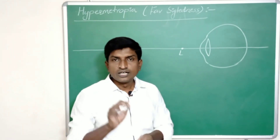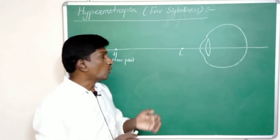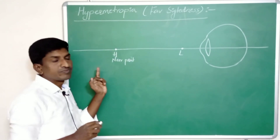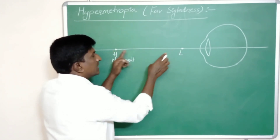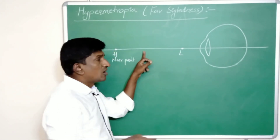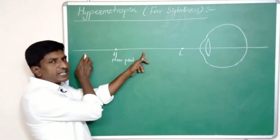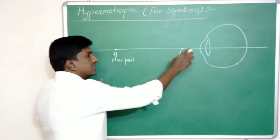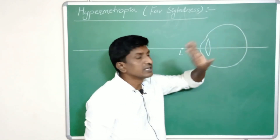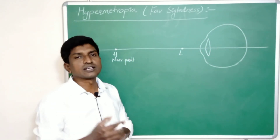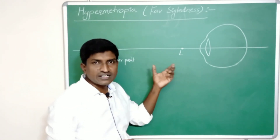To correct the problem of hypermetropia, we need to use a lens which brings the image of objects outside H. The object is kept between H and L, and the image of that object should be formed at least on H or outside H. This image then acts as an object for the eye lens, which can then form the image on the retina.